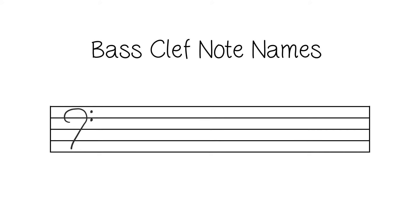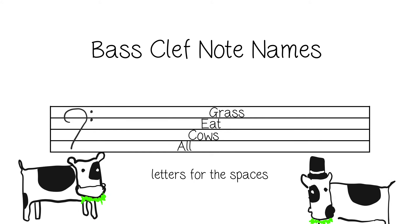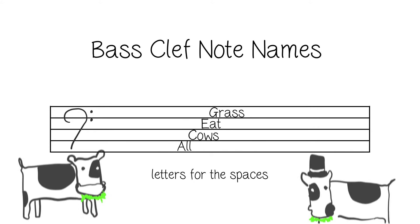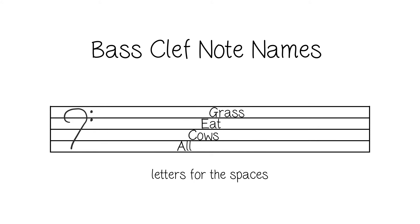Now let's focus on the spaces. For the spaces, we're going to use a different mnemonic device: "All cows eat grass." That gives us A in space 1, C in space 2, E in space 3, and G in space 4.